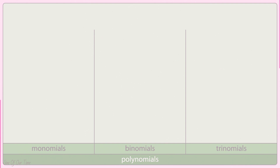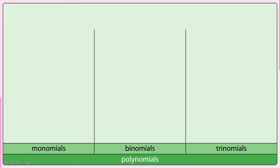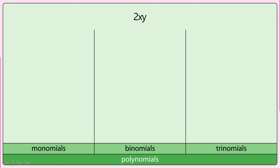The rules of SHOUT IT OUT are simple. A polynomial will appear on screen and you will have a few seconds to shout out whether it is a monomial, binomial or trinomial. For example, if you see the following on your screen, then shout out MONOMIAL.